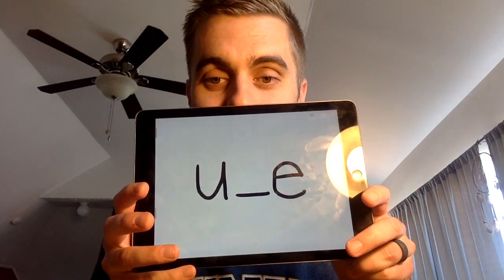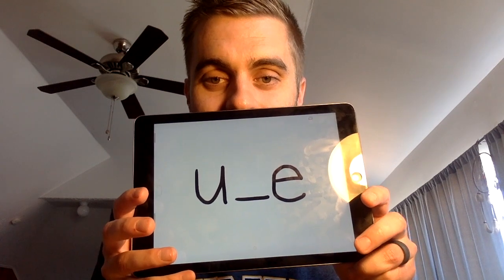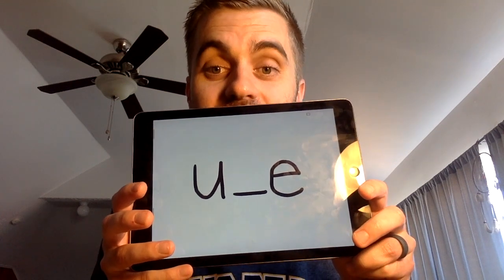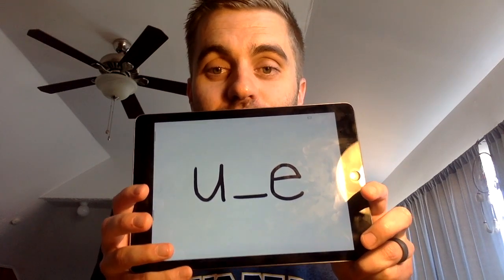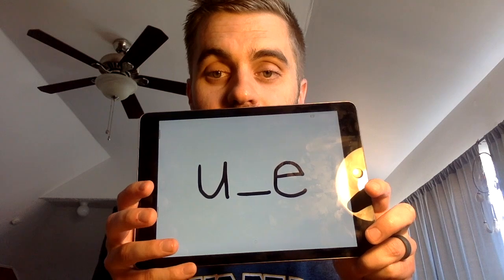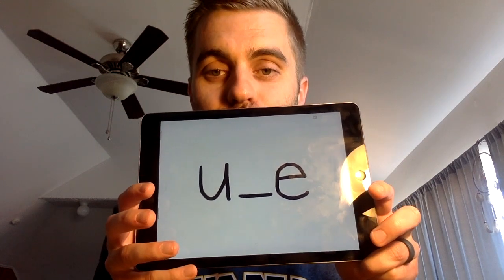The spelling pattern for long U that we're learning about today is long U with a sneaky E. And that sneaky E at the end changes it from short U to long U.